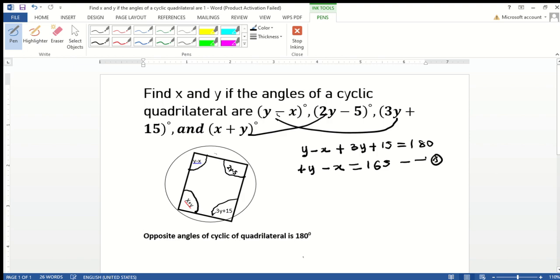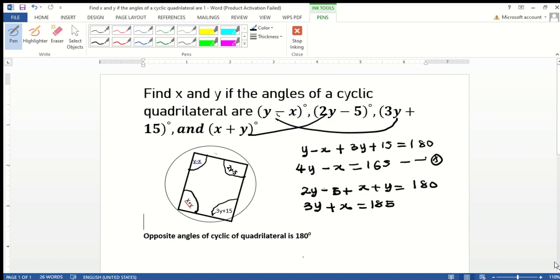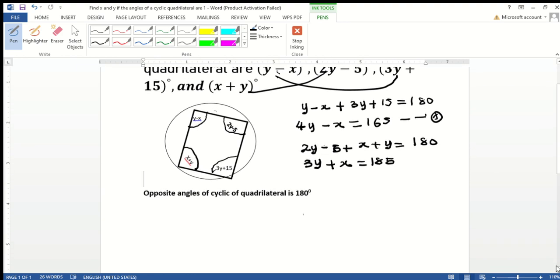Then let's go back to the next one, which is (2y - 5) + (x + y). This must also give 180, opposite angles of a cyclic quadrilateral. So we have 2y plus y, which is 3y, plus x minus 5 equals 180. Moving -5 to the right hand side gives 180 plus 5, that's 185. So 3y + x = 185. This is equation two.